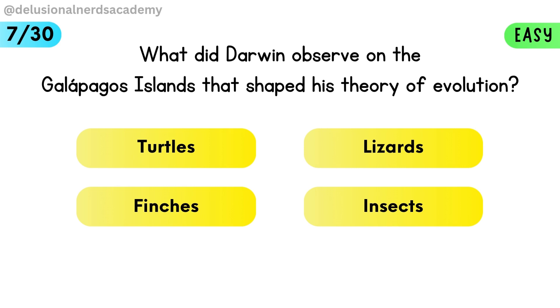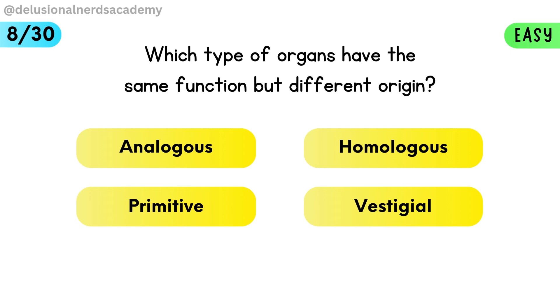What did Darwin observe on the Galapagos Islands that shaped his theory of evolution? Darwin studied finches on the Galapagos Islands, which influenced his theory. Which type of organs have the same function but different origin? Analogous organs perform the same job but come from different origins.